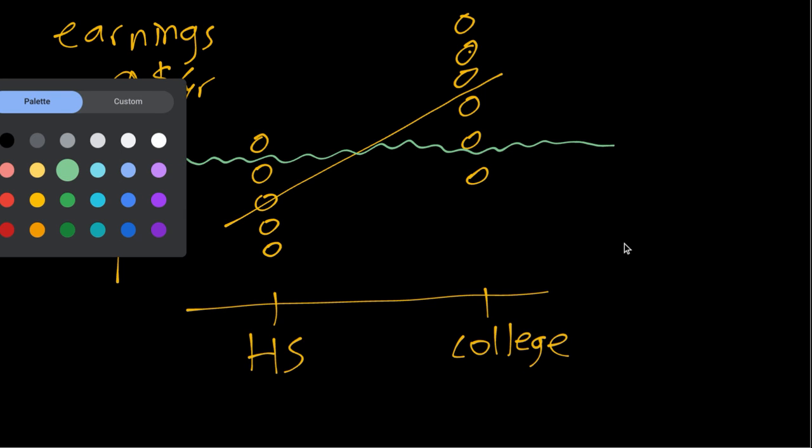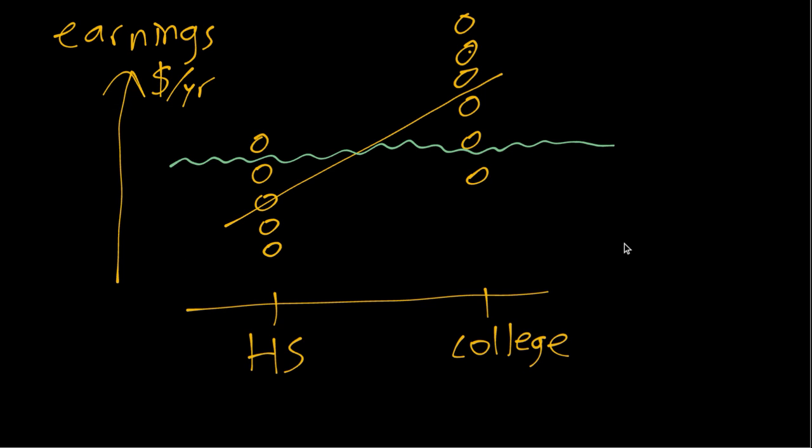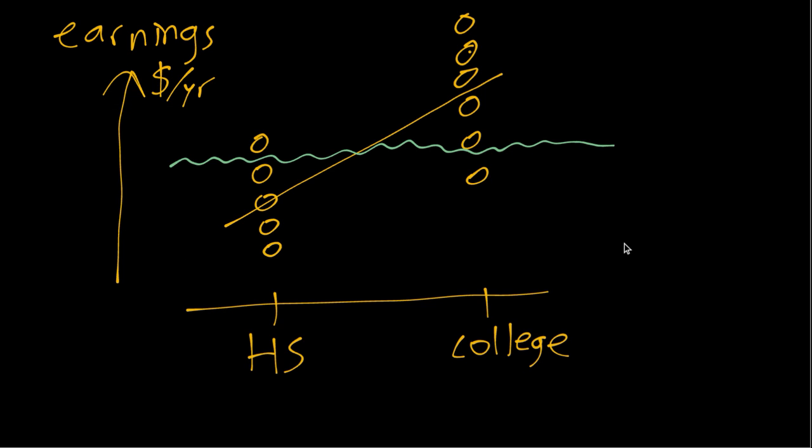So imagine we get responses from everybody below that level of earnings. So all these purple dots are the ones we actually get to see in our survey responses, but the ones above that we do not see.